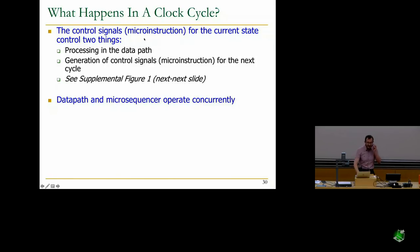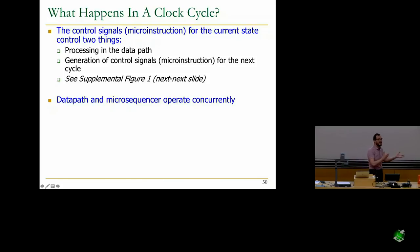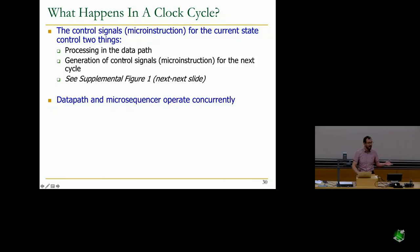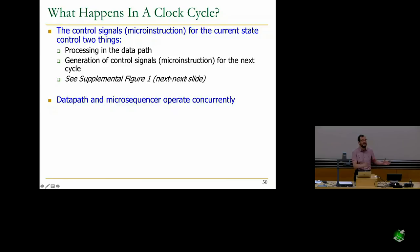The control signals for the current state control two things: processing in the data path — which MUXes should be enabled, what should be gated onto the bus, what the ALU should do — and the generation of control signals for the next cycle. Some control signals can be don't-cares depending on the state. Data path and micro-sequencer operate concurrently. You generate control signals for the next cycle in the current cycle, due to the critical path design principle.